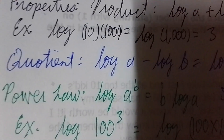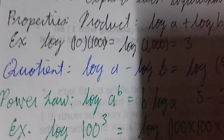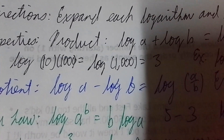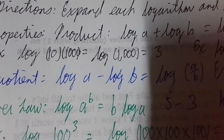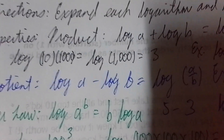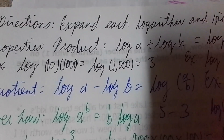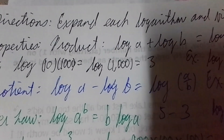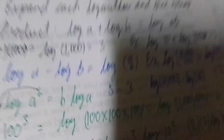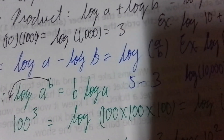Next, power law. With the power law, log of A raised to the B power — remember, the B slides down from its exponent, and that becomes B times the log of A.